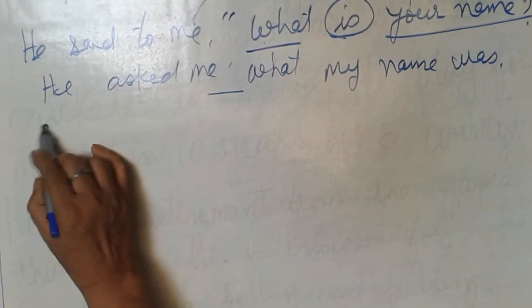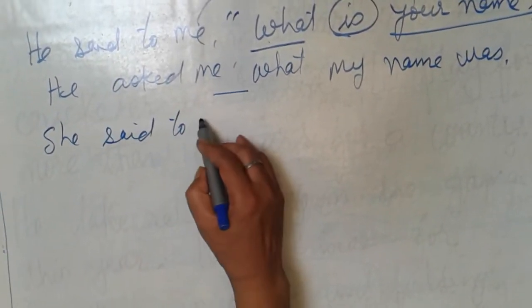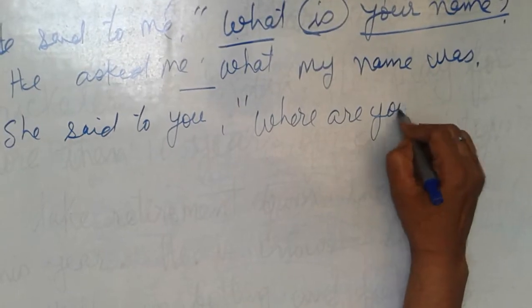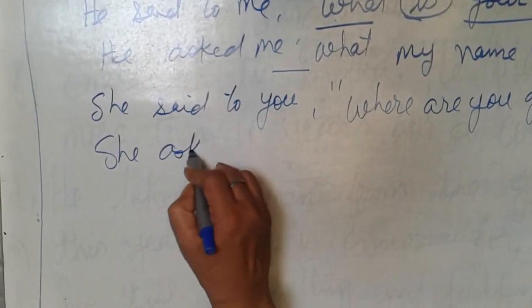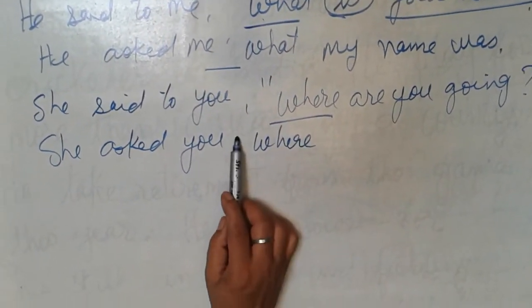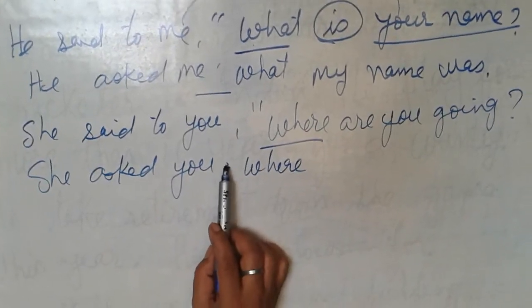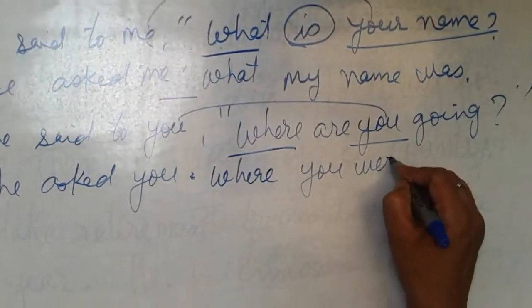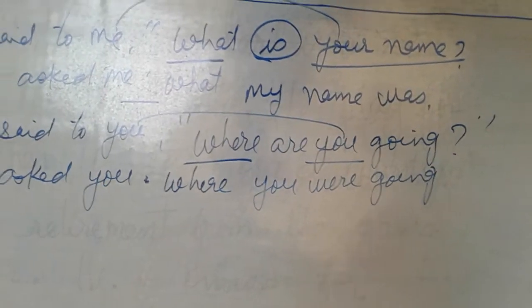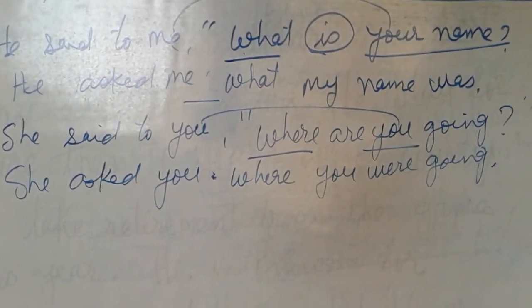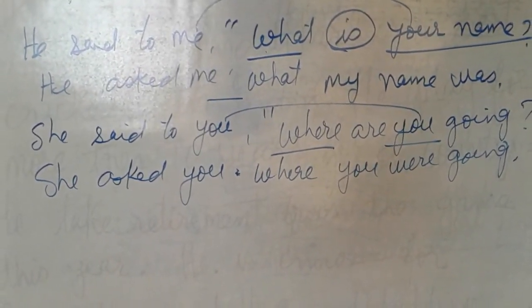Second sentence. She said to you, 'Where are you going?' She asked you where you were going. After 'where', you should not write anything else — no 'if' or 'whether'. You change 'you' according to 'you', and here you write 'where you were going', followed by a full stop. You have to be very careful about this.